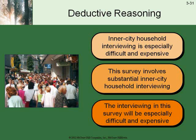Another example of deductive reasoning: household interviewing is especially difficult and expensive. If you go into an inner city and do research — spending a lot of time talking to people and collecting data — it becomes difficult and expensive. Then: this survey involves substantial inner city household interviewing. We know that type of research is expensive, the survey requires that type of research, therefore the interviewing in this survey will be especially expensive. That's a deductive logic process.